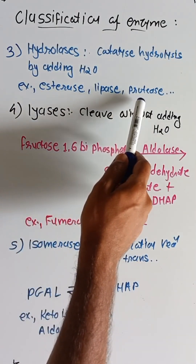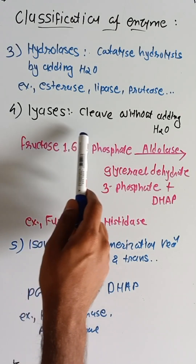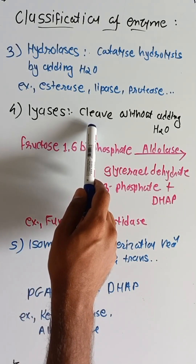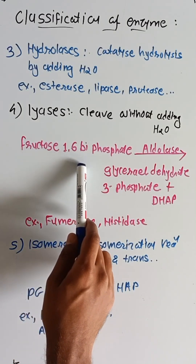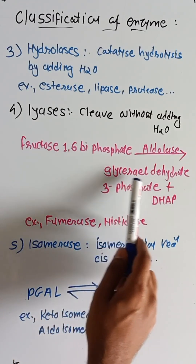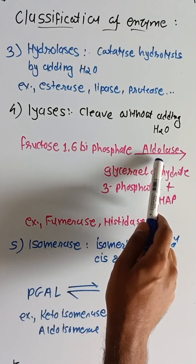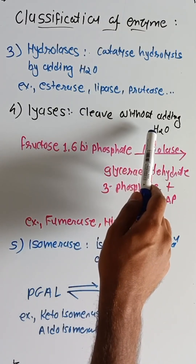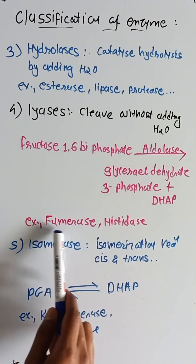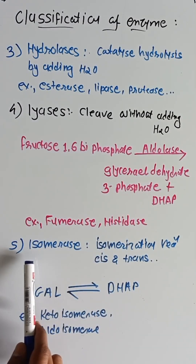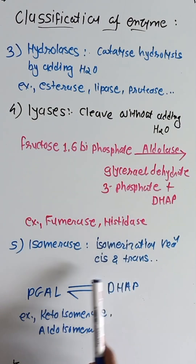Examples of hydrolases are lipase and protease. The fourth class is lyases, which cleave molecules without adding H2O. For example, fructose-1,6-bisphosphate is converted into glyceraldehyde-3-phosphate using aldolase. These enzymes cleave without adding H2O and also produce dihydroxyacetone phosphate.